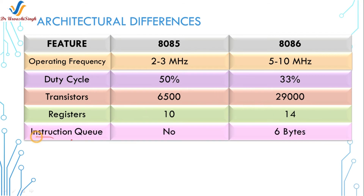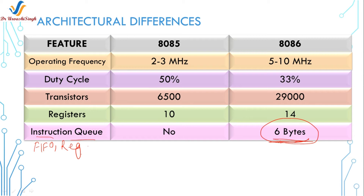The next feature is the instruction queue. This is a FIFO — First In First Out — register used in the 8086 microprocessor. Its size is 6 bytes. It is used to increase the throughput of instructions by storing the next 6 bytes of the next instruction while the present instruction is executing in the 8086. There is no instruction queue in the 8085 microprocessor.